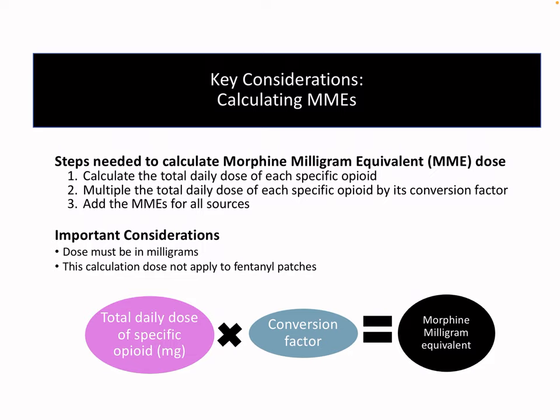You'll also see a morphine milliequivalent given on PMPs. Calculating morphine milliequivalents is relatively easy. First, you want to calculate the total daily dose of each specific opioid. Then multiply that daily dose times its conversion factor, and then add up the morphine milliequivalents for all those sources. Some important considerations: the dose must be in milligrams, and this calculation doesn't apply to fentanyl patches.